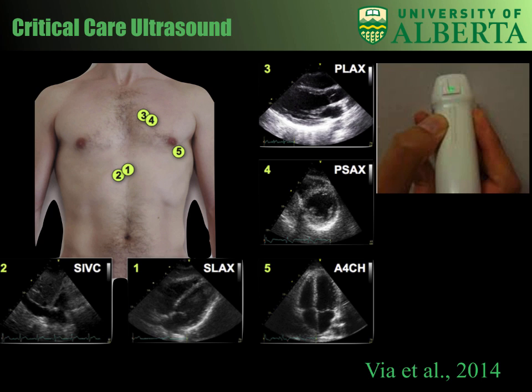On point 5, with the probe placed immediately infralateral to the nipple in the left lateral cubitus, we can see the apical four-chamber in image 5. And finally, below the xiphoid process, we can see the subcostal IVC in image 2, in the sagittal plane. And with the probe rotated 90 degrees from the IVC view and depressed beneath the sternum, we can see the subcostal four-chamber view — the so-called subcostal long axis view.